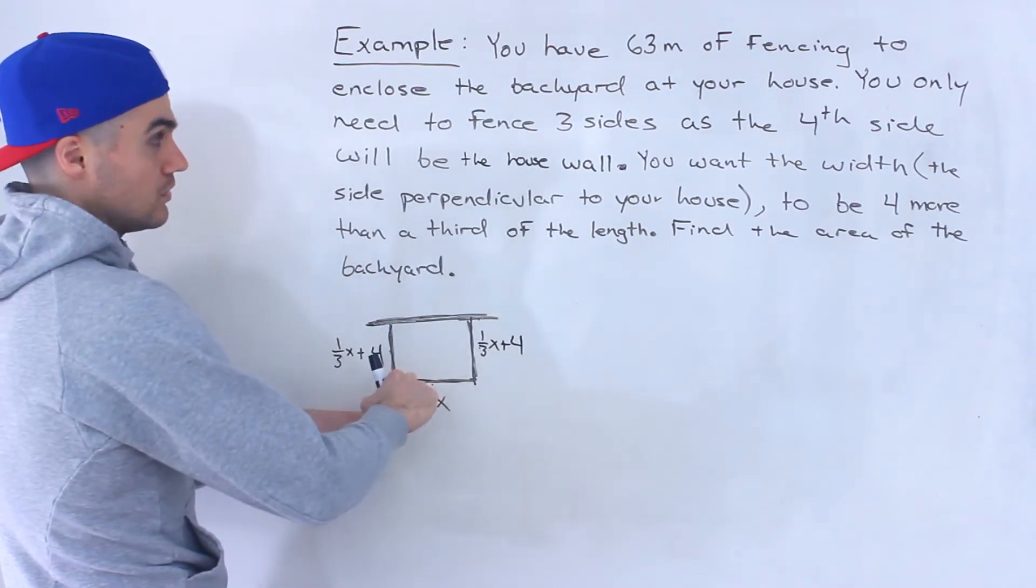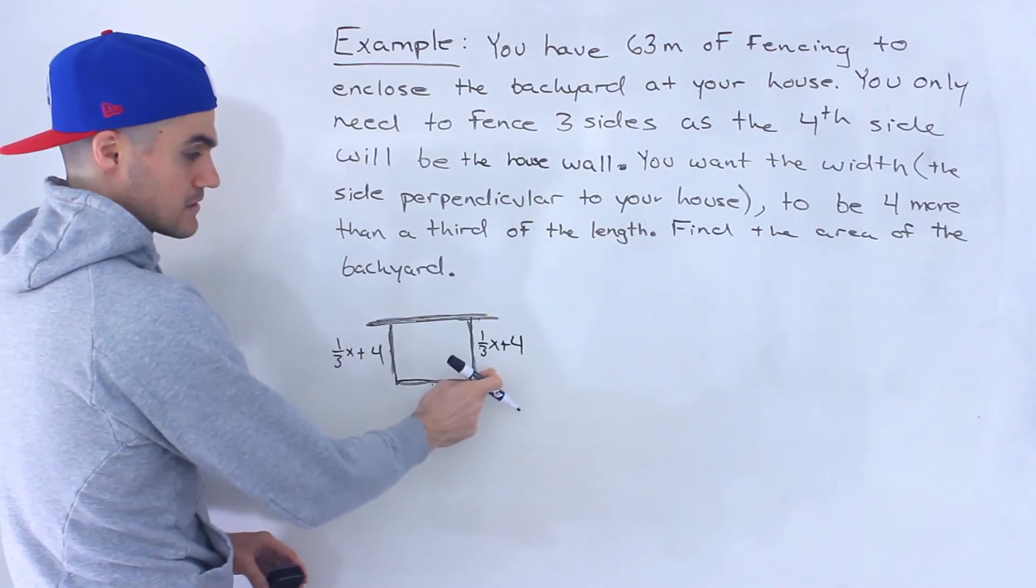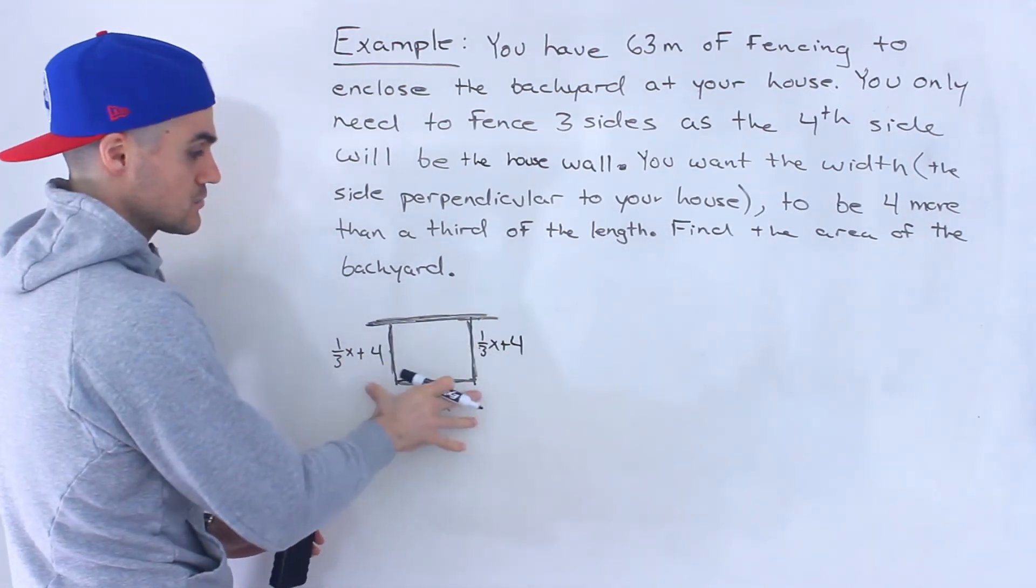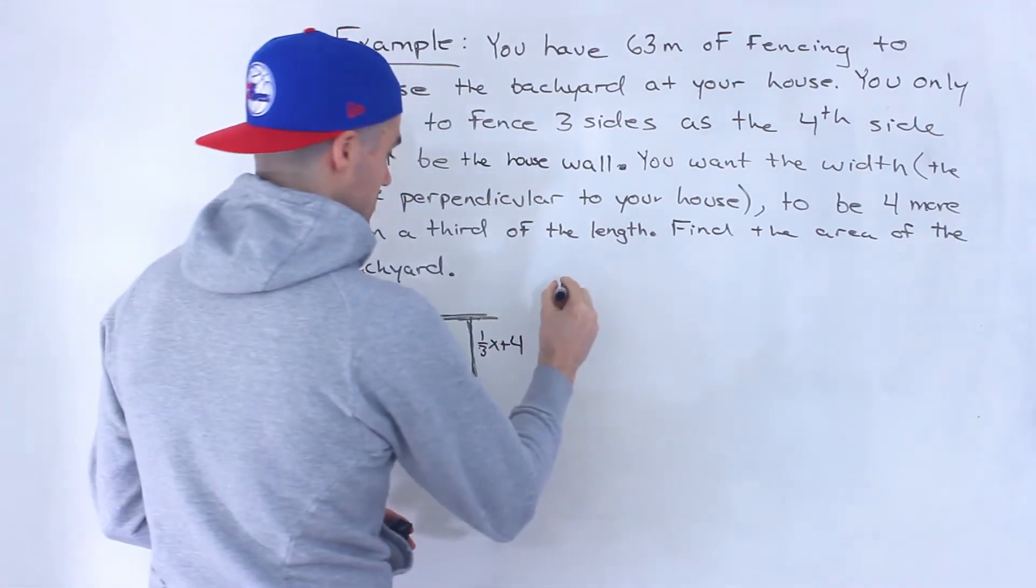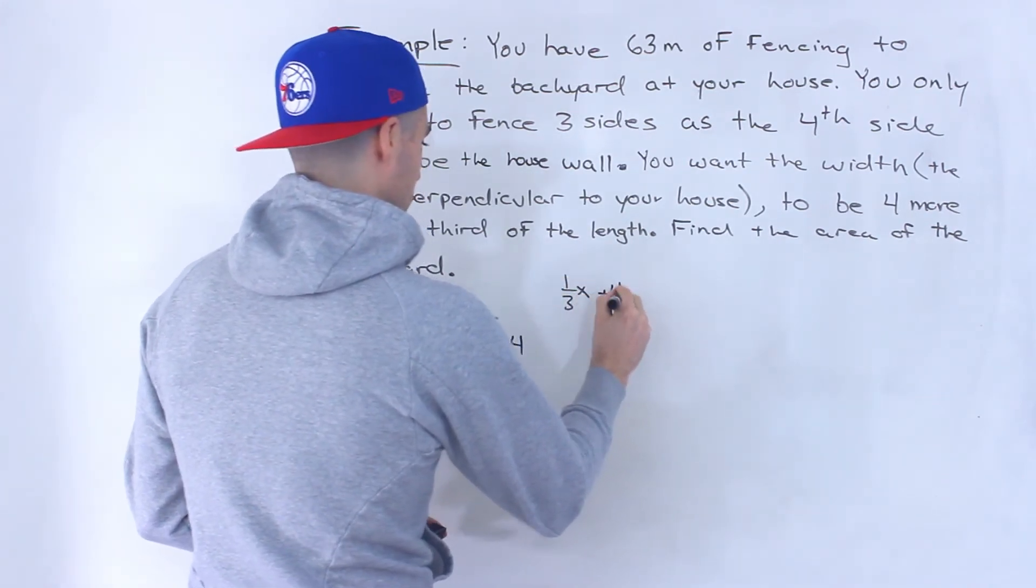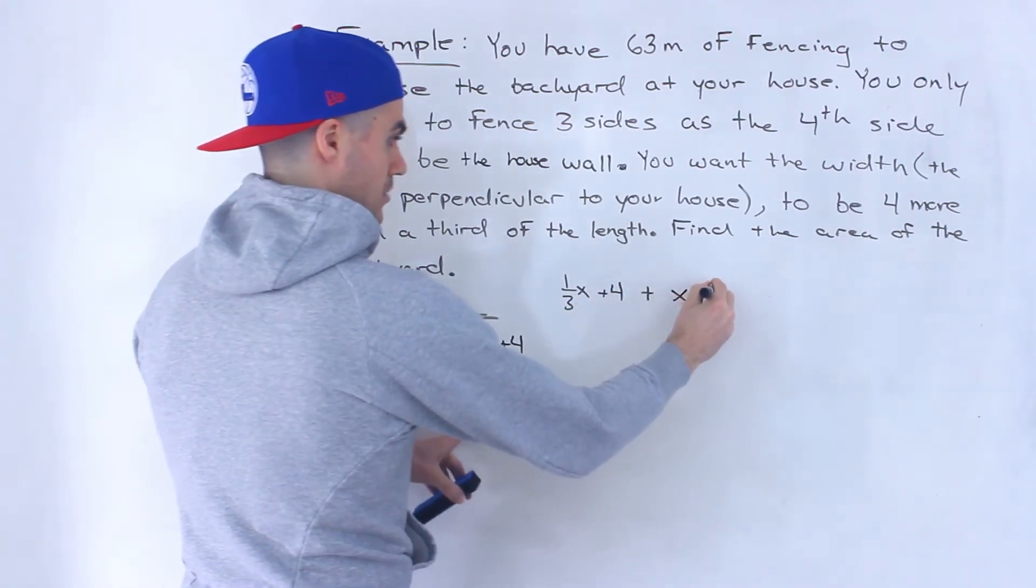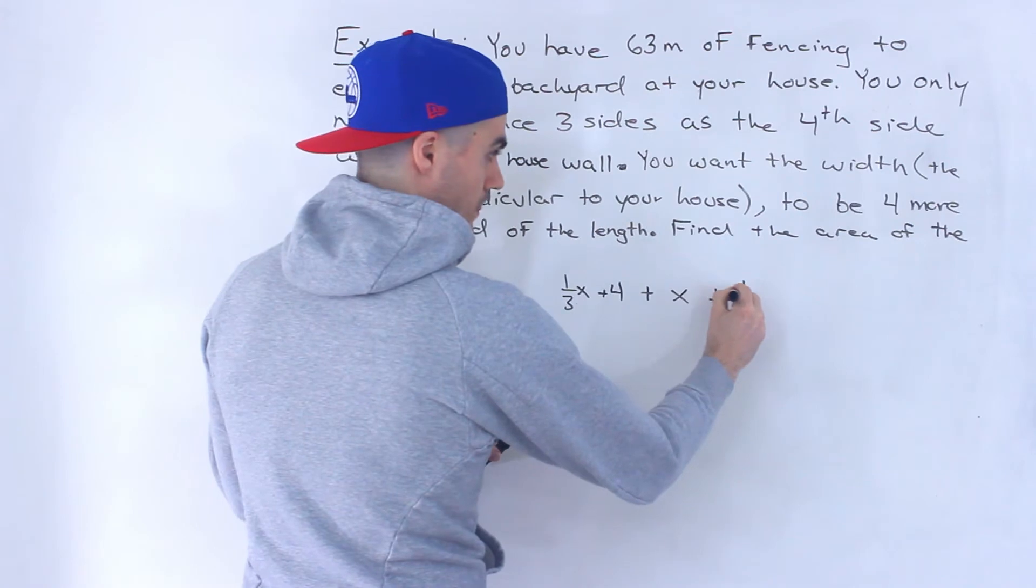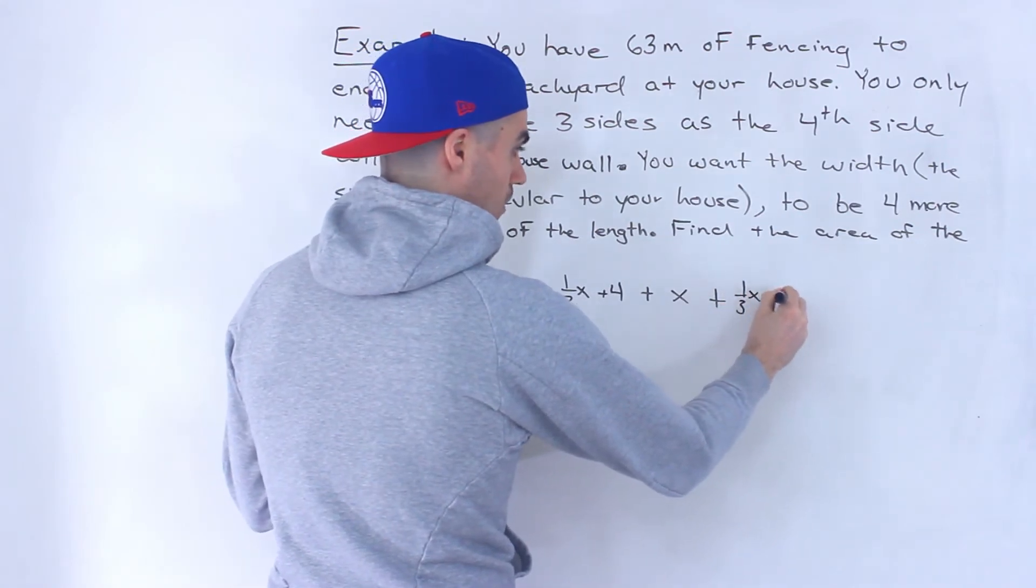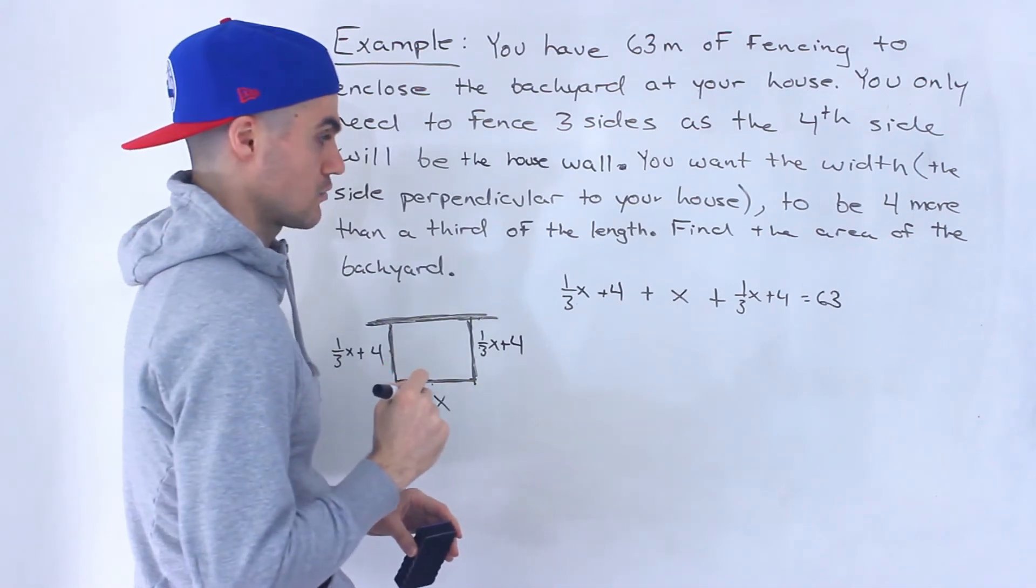And notice that the total of this fencing is 63 meters. So what we could do is we could add these three expressions, and these three expressions added have to equal 63. So we would have one over three x plus four, plus x, plus one over three x plus four. That has to equal 63.